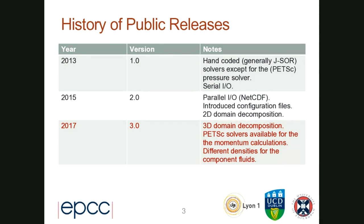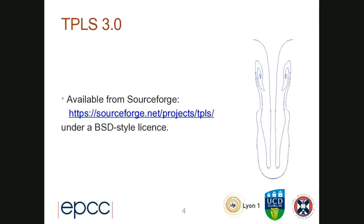Version 2.0 still had 2D domain decomposition. Now in the current public version there is a 3D domain decomposition, and we have PETSc solvers available for the momentum calculations in addition to the pressure solver. Some new physics was introduced, because now the fluid components can have different densities. You can find the code on SourceForge — it's available under a BSD-style license, so I'd encourage you to download it and play with it.